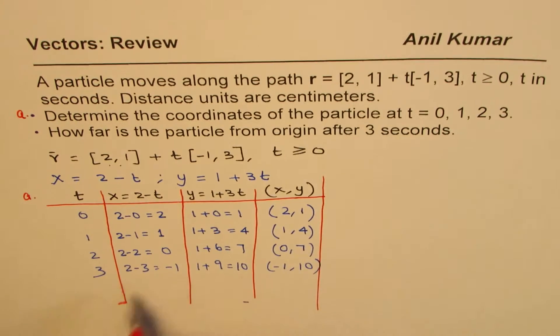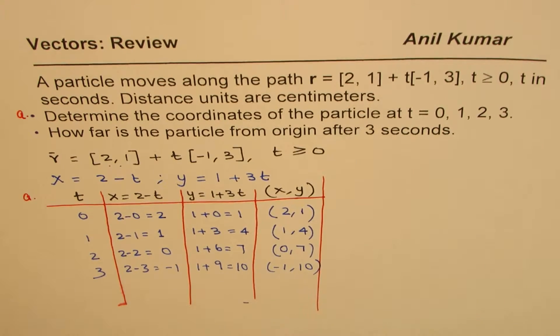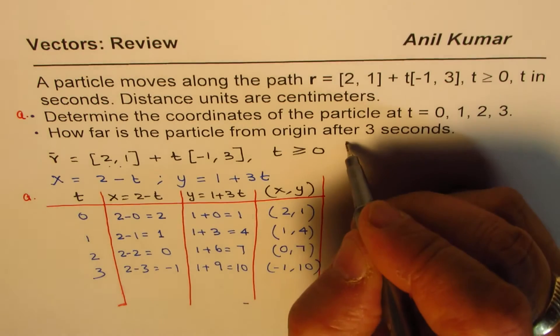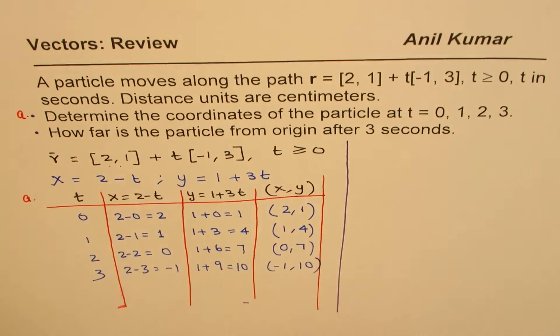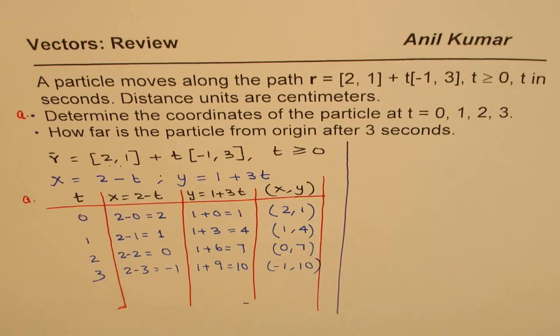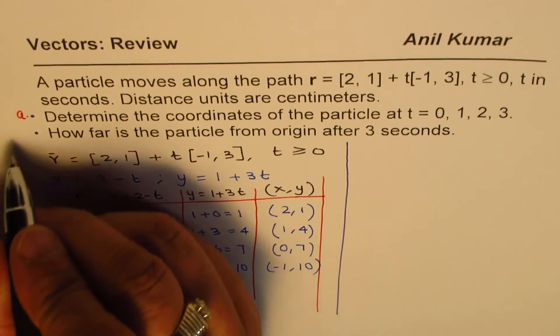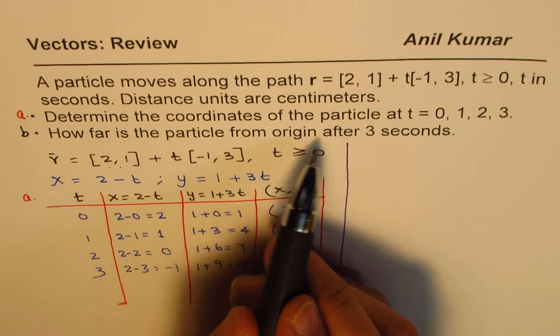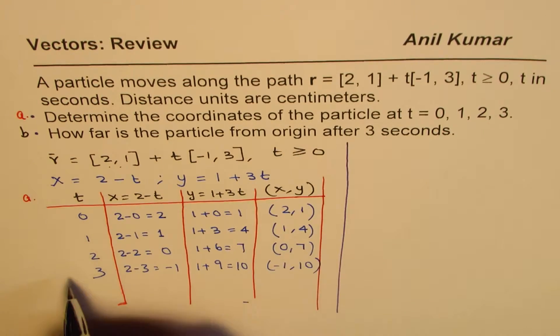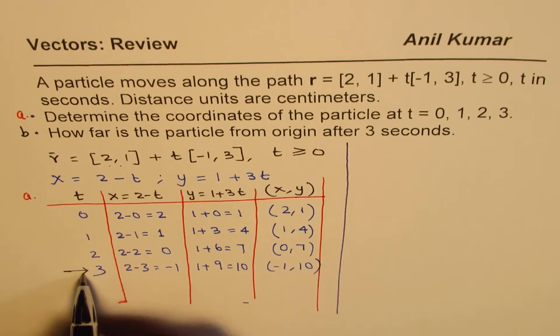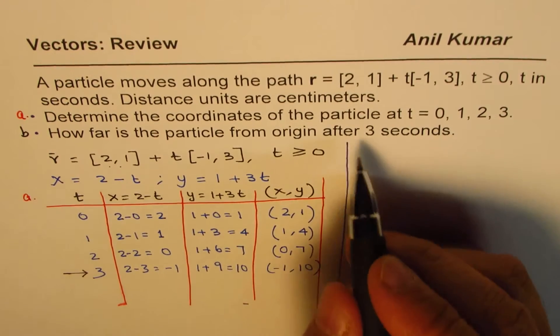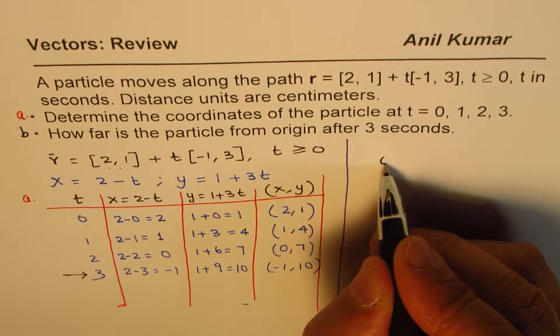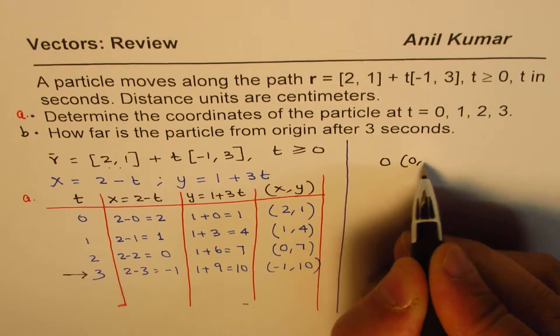Now let's look into part b. How far is the particle from origin after 3 seconds? So that is when t is 3. So we are talking about origin, let's say O, which is (0,0).